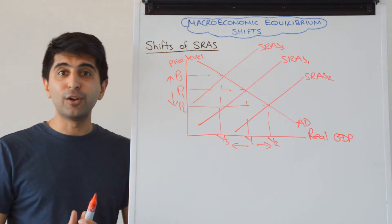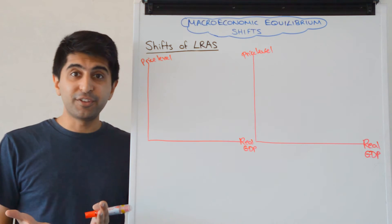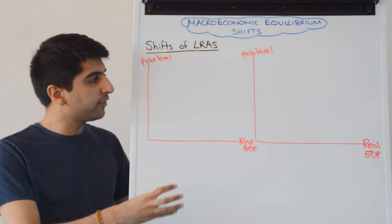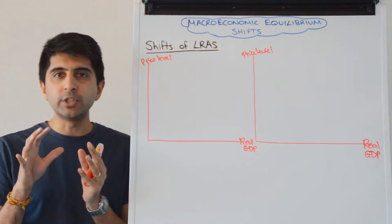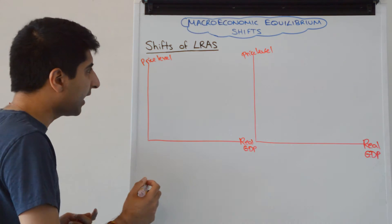Simple as that. Let's now look at LRAS. For shifts of LRAS, again, you've got two options, the classical model or the Keynesian model. Both are really, really simple. Do whichever one you prefer. Let's look at the classical model first.